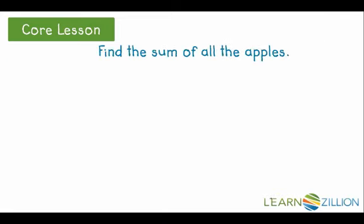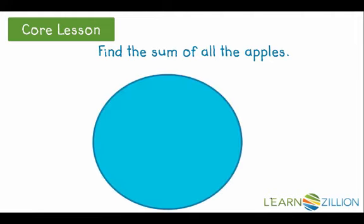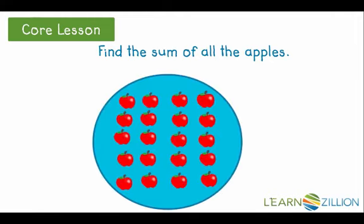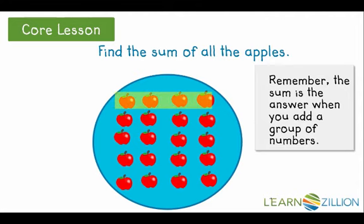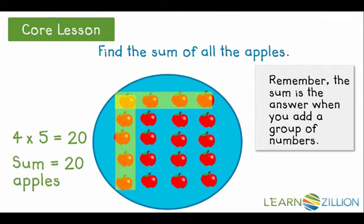Now we need to find the sum of all the apples. Remember, the sum is the answer when you add. We can find the sum by simply counting the apples below, or we could use the array to multiply the apples. Notice how we have four apples going across and five apples going down. Four times five equals twenty. So the sum is twenty apples.